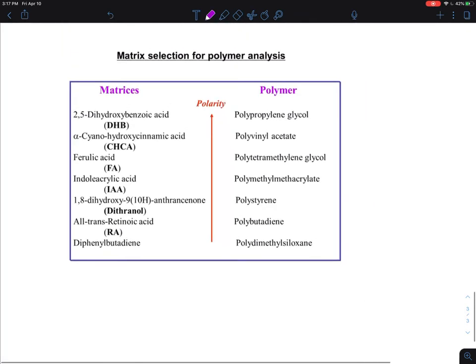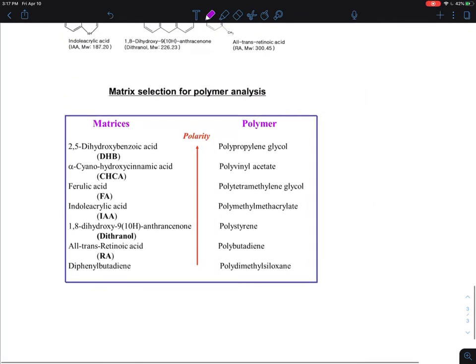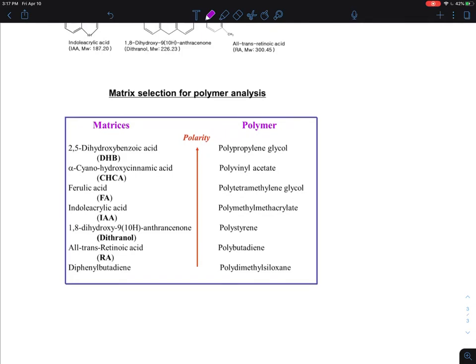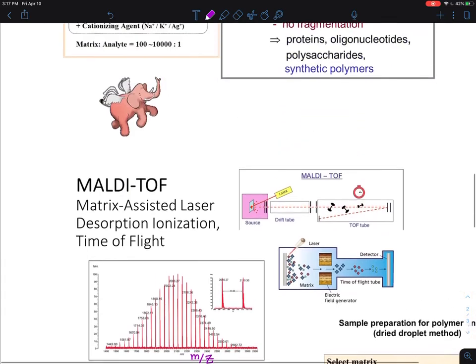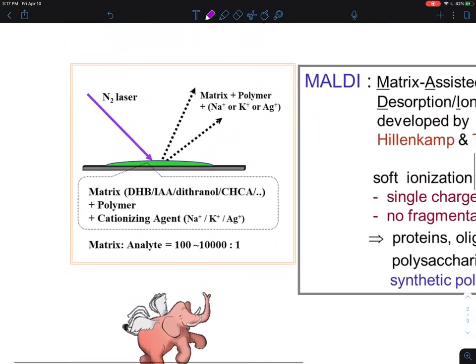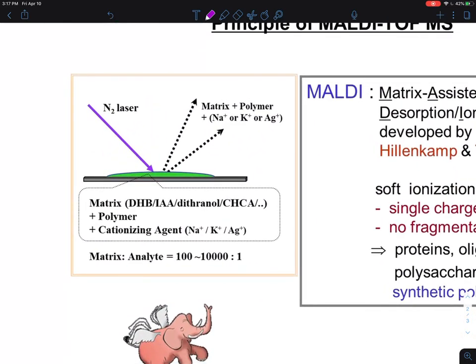The problem with MALDI-TOF technique is we don't know which matrix is going to work out. You just need to find the right cocktail of matrix, cation agent, and solvent that you mix together for drying.